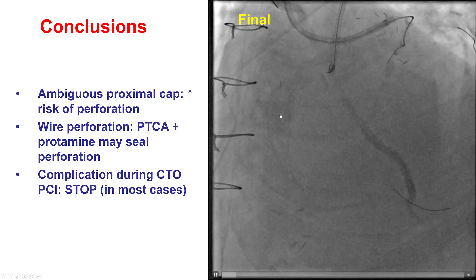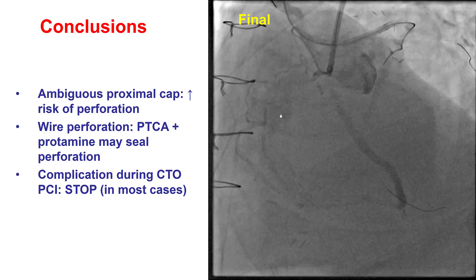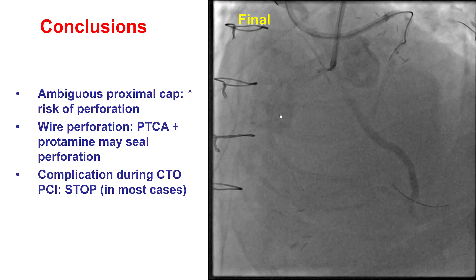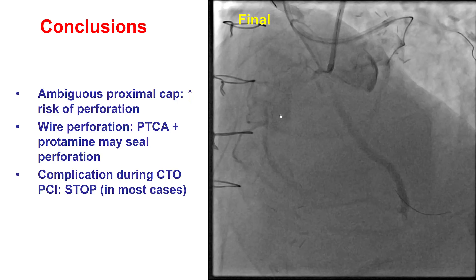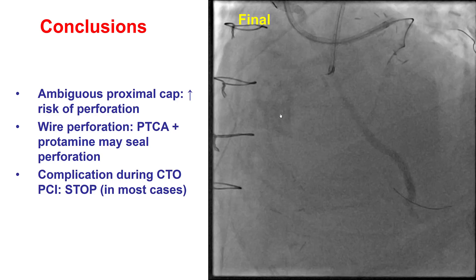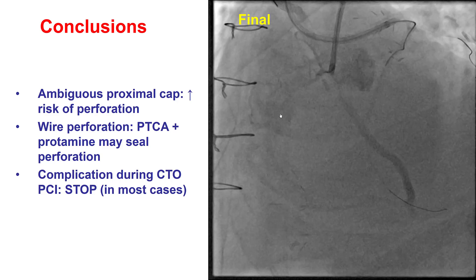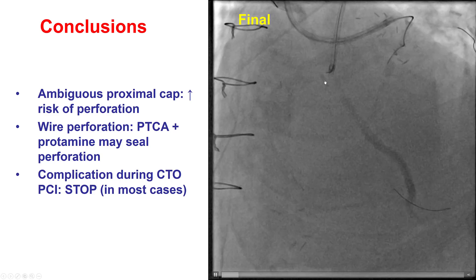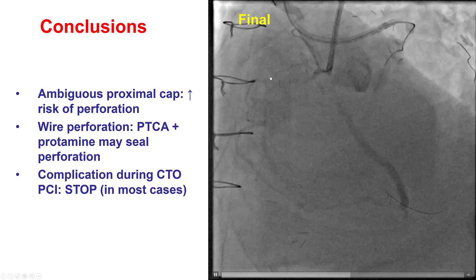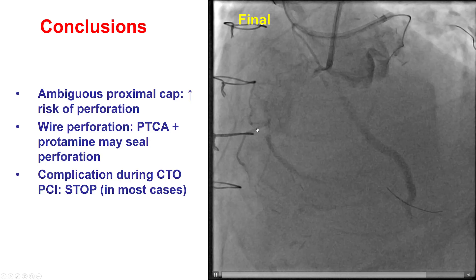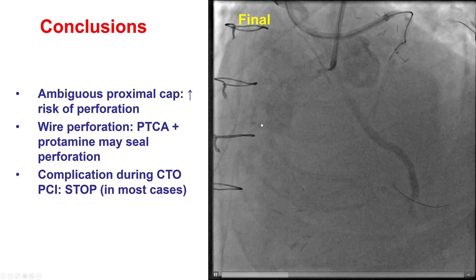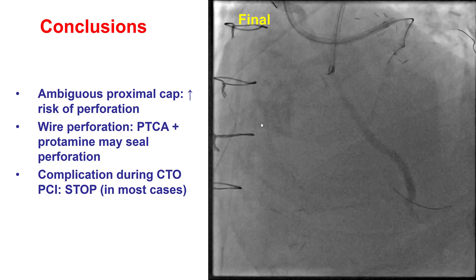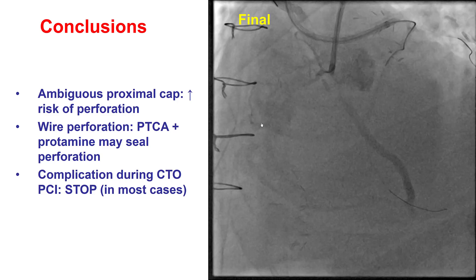After this had happened, we stopped for various reasons. First, because we did have a complication, and a complication is one of the reasons to stop the procedure unless continuation can help take care of it. The other reason is that we had exhausted our crossing options. Going retrograde through the ipsilateral epicardial collateral would have been a very high-risk procedure in a patient who already had a complication. Potentially, the procedure could be reattempted in a few months depending on the patient's clinical condition.